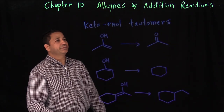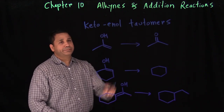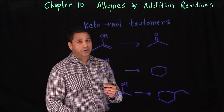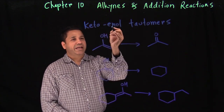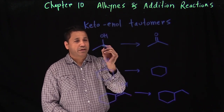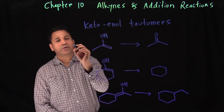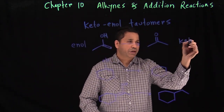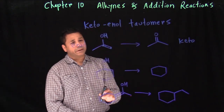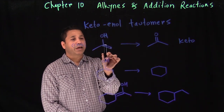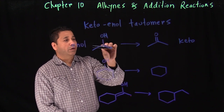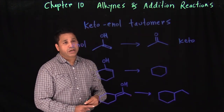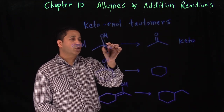Before the second reaction, we need to learn an important concept: keto-enol tautomerism. Enol comes from alkene with alcohol — a carbon-carbon double bond with an OH group. Keto comes from ketone. Anytime you have an enol in your reaction, enol is not stable, so it will automatically change to the keto form.